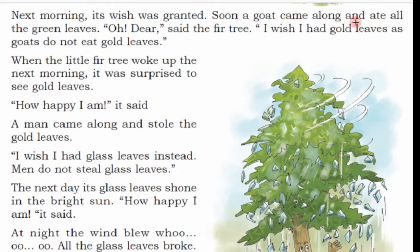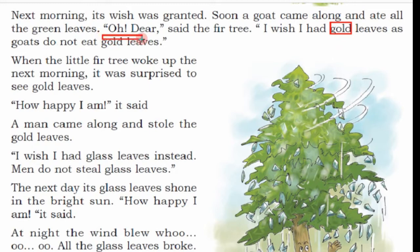Soon a goat came along and ate all the green leaves — sighr hi ek bakri aayi aur uski sabhi hari pattiyaan kha gayi. Oh dear, said the fir tree, I wish I had gold leaves as goats do not eat gold leaves. Usne kaha — O priya, main chahta hoon ki meri pattiyaan gold ki ho jaayein, yani ke sone ki ho jaayein, kyunki bakryan jo sone ke patte hain unhe nahi khati. Yeh uski second wish thi.